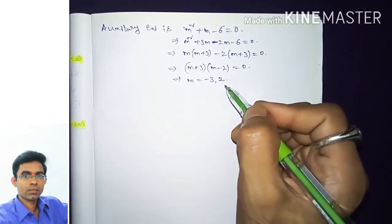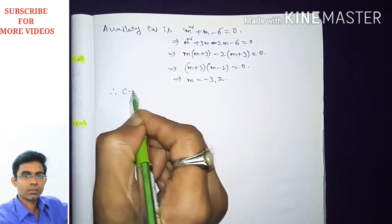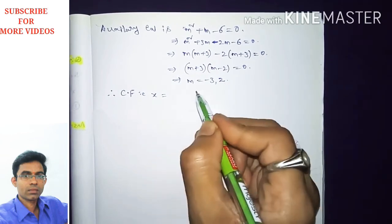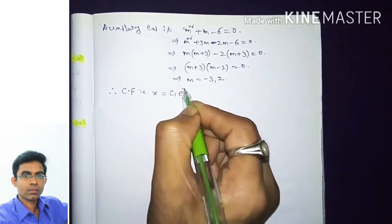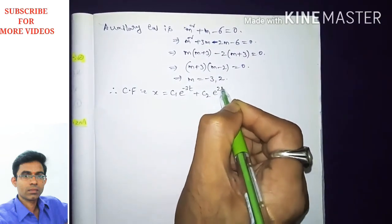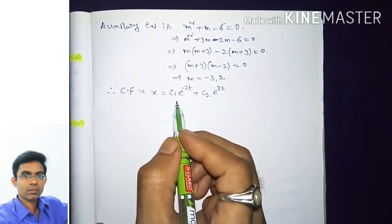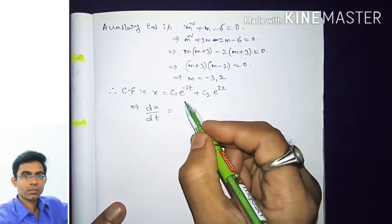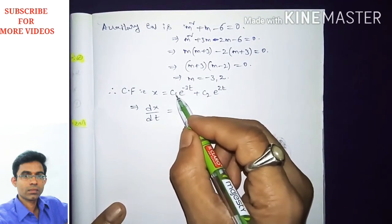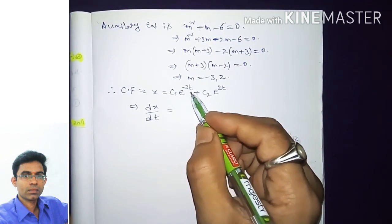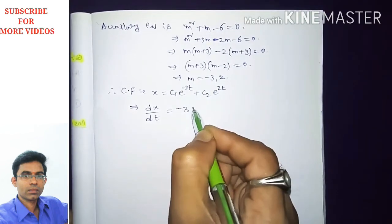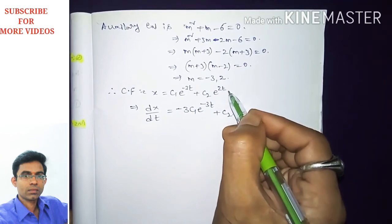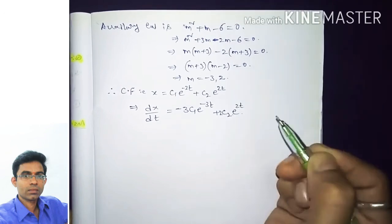The complementary function gives x = c1·e^(−3t) + c2·e^(2t). Differentiating with respect to t: dx/dt = −3c1·e^(−3t) + 2c2·e^(2t).